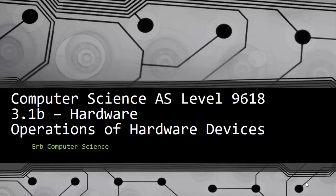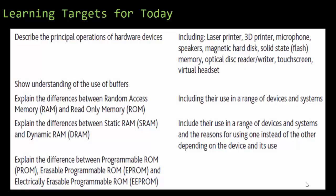This is for computer science AS level 9618 for Cambridge. We're going to be talking about the hardware operations of hardware devices, picking up where we left off. In class, we talked about the difference between RAM and ROM, how they're used in a range of devices and systems, the difference between static RAM and dynamic RAM, the different types of ROM, and today we're focusing on buffers and all these different hardware devices.